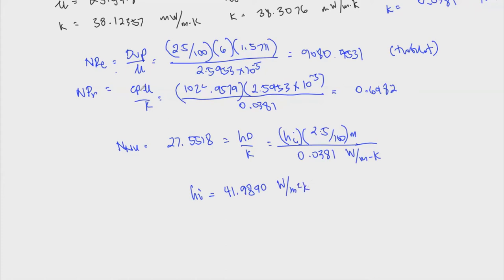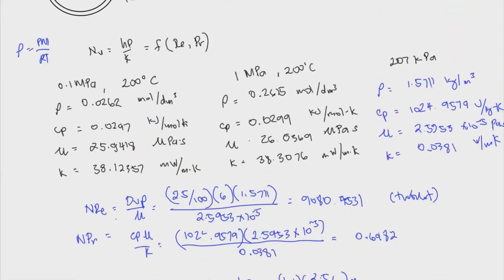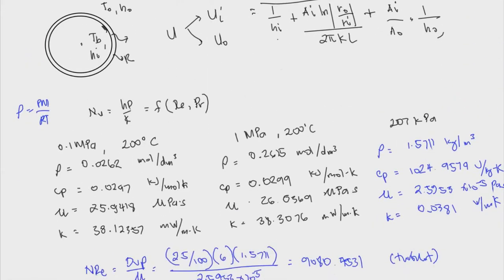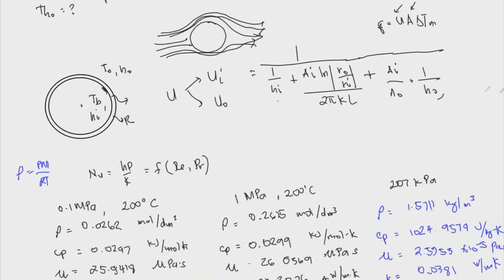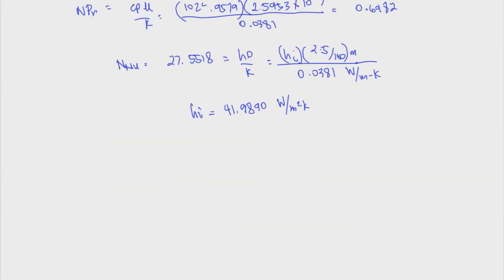The diameter is the inside diameter, 2.5/100 m, and k is 0.0381 W/(m·K). This makes our HI equal to 41.9890 W/(m²·K). That is for our first condition — HI. Now the next one would be HO.